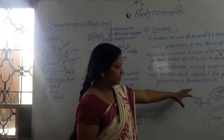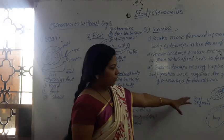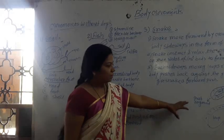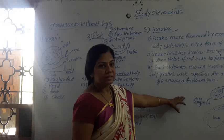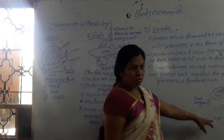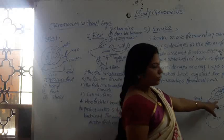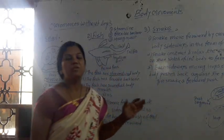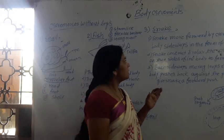Next is snake. First, let's see the structure of the snake. Snake is long and cylindrical, and its backbone is also long and flexible. Because of its flexible backbone, the snake can easily bend and form loops or curves, as you can see here. Snake has no legs but it can move very fast.